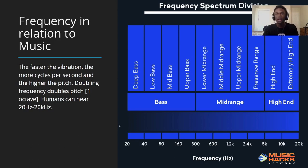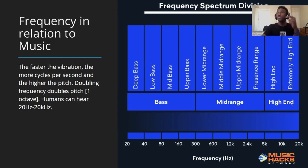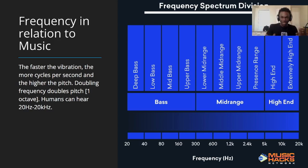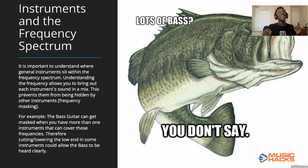That's 20,000 Hertz — that's how wide the human frequency spectrum is. It's divided into around 10 octaves. As you can see here, you have the deep bass, low bass, mid bass, going all the way up to the extremely high end. With that division and understanding, we can look at where instruments fit in the entire spectrum, and then apply that to mixing.